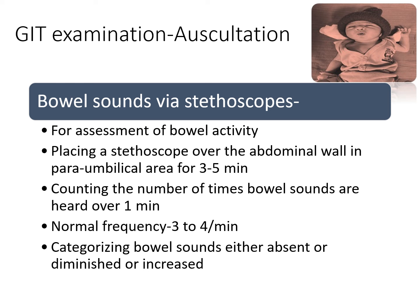Then GI auscultation should be done for bowel sounds. We have to assess bowel activity by placing the stethoscope over the abdominal wall in the paraumbilical area for 3 to 5 minutes. We have to count the number of times bowel sounds are heard over a 1-minute period. Normal frequency is 3 to 4 per minute. Then we have to categorize if it is normal, absent, diminished, or increased bowel sound.